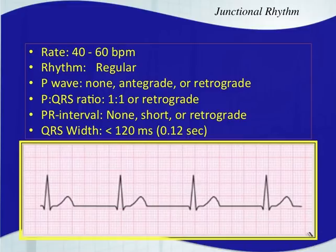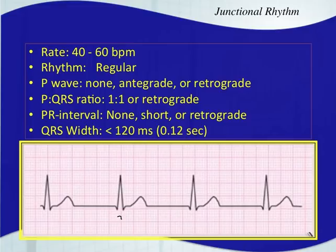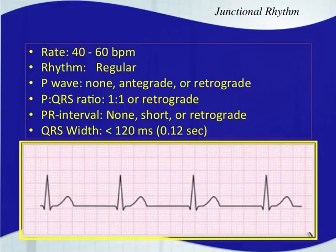The P wave has many different options with a junctional rhythm. It could be antegrade — in some examples you don't see a single P wave because the atria are still depolarizing but the P wave is probably buried within the QRS. It could be antegrade like a sinus rhythm with a P wave before the QRS, but it will have a shorter PR interval because of where it's originating — there's no AV nodal pause.